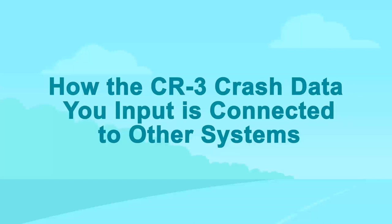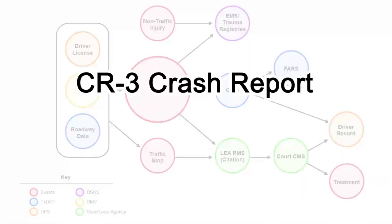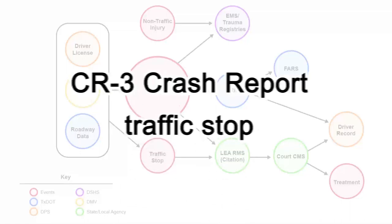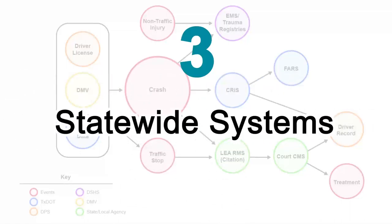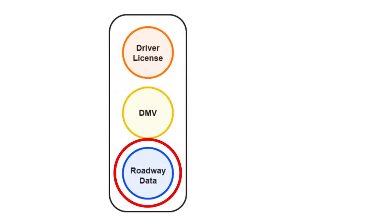How CR3 crash data is connected to other systems. While it may seem like the main uses of your CR3 crash reports are insurance companies and courts, the reality is that your data is connected to many systems maintained by Texas agencies. Without even knowing it, you may have contributed to and benefited from these systems. When you complete a CR3 crash form or make a traffic stop, you access data from three statewide systems through your agency software: driver's license, Department of Motor Vehicles, and the roadway data system.